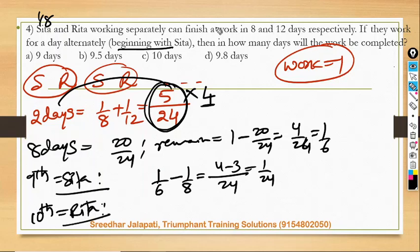Now on tenth day, to finish this one by twenty-fourth part of the work, Rita comes. And the rate at which Rita works every day is one by twelve, and work to be done is one by twenty-four. So Rita takes one by twenty-four by one by twelve, which is twelve by twenty-four, which is half a day.